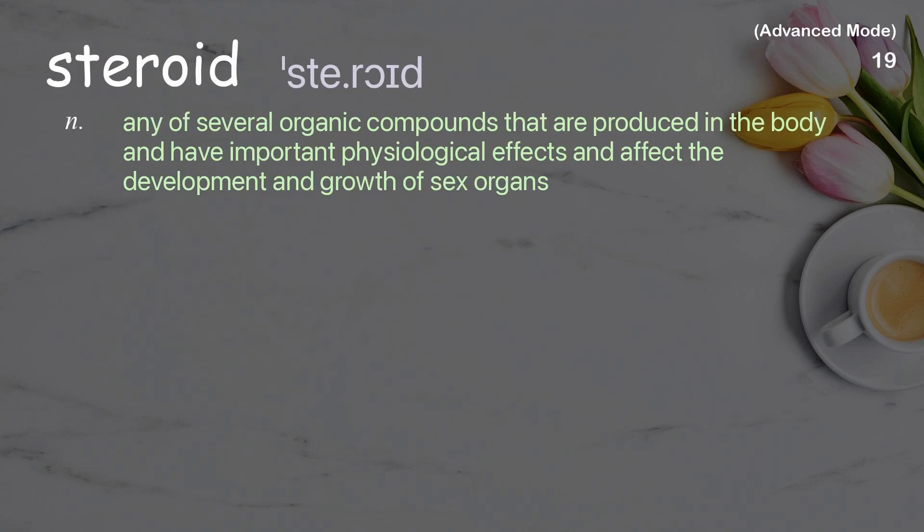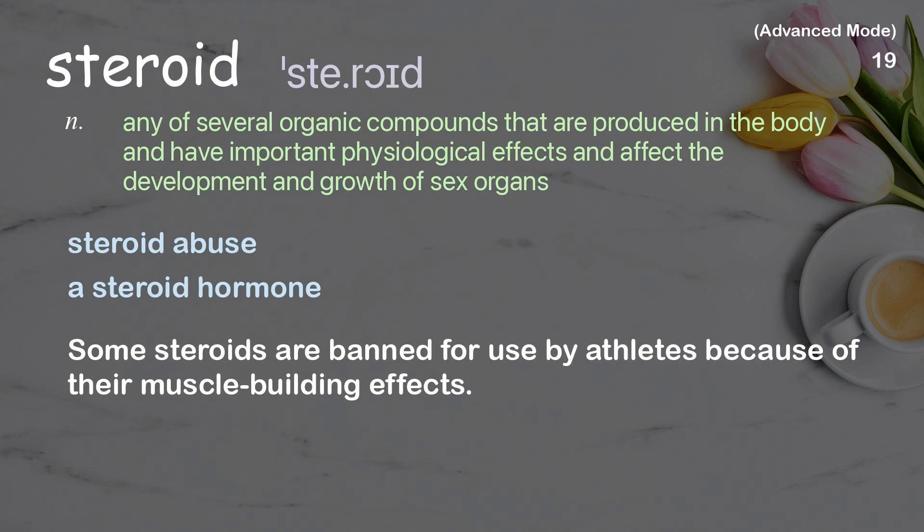Steroid: Any of several organic compounds that are produced in the body and have important physiological effects and affect the development and growth of sex organs. Examples: Steroid abuse. A steroid hormone. Some steroids are banned for use by athletes because of their muscle-building effects.